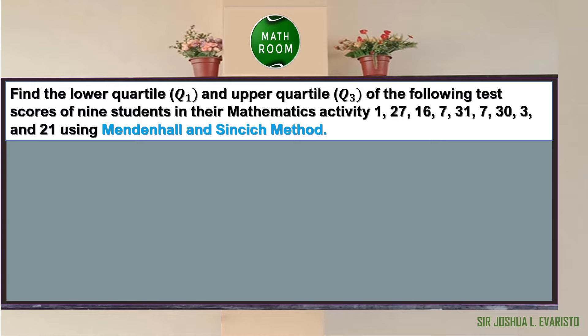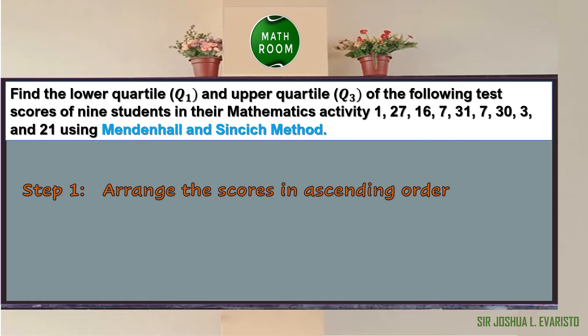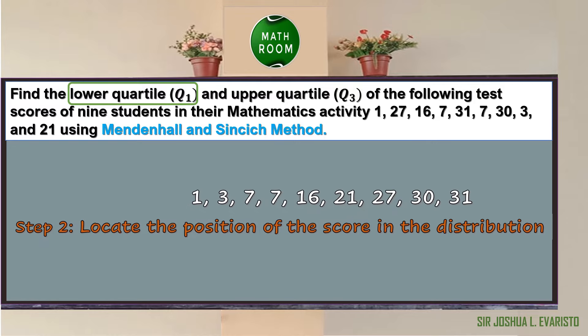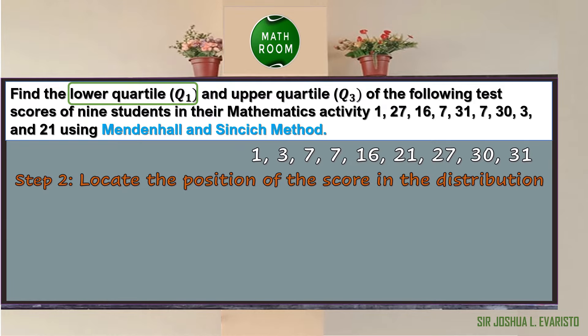The test scores of 9 students in their mathematics activity are: 1, 27, 16, 7, 31, 7, 30, 3, and 21, using the Mendenhall and Sinsic method. For the solution, the first step is to arrange the scores in ascending order: 1, 3, 7, 7, 16, 21, 27, 30, and 31. The second step is to locate the position of the scores in the distribution. Let us compute the lower quartile, Q sub 1.